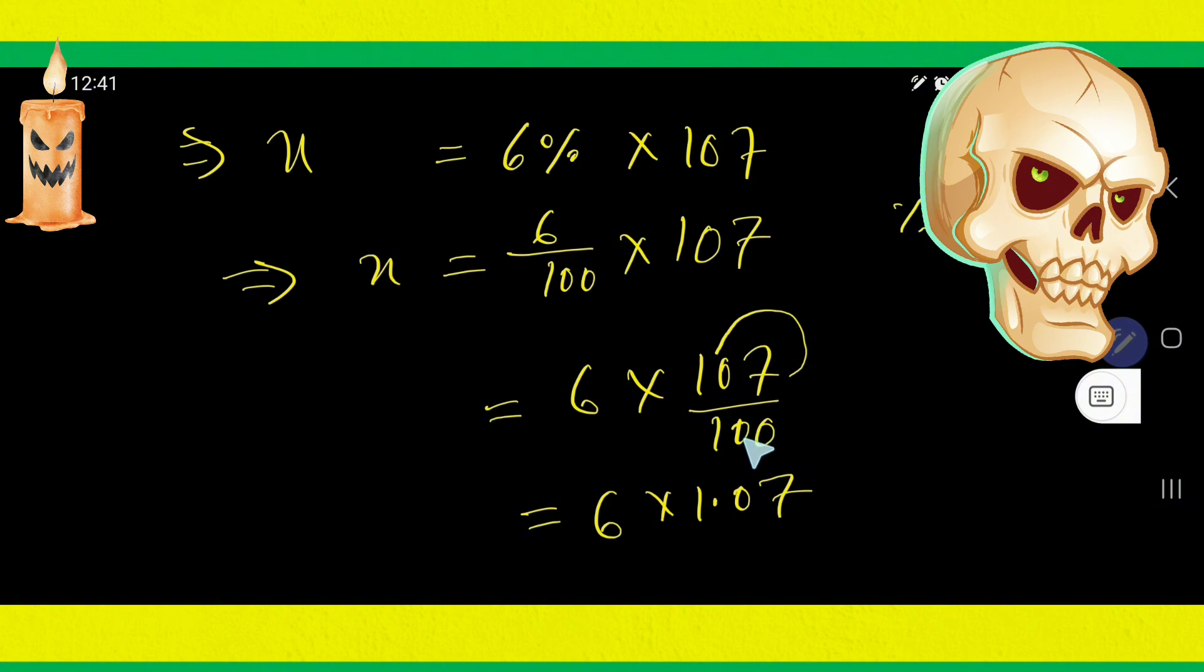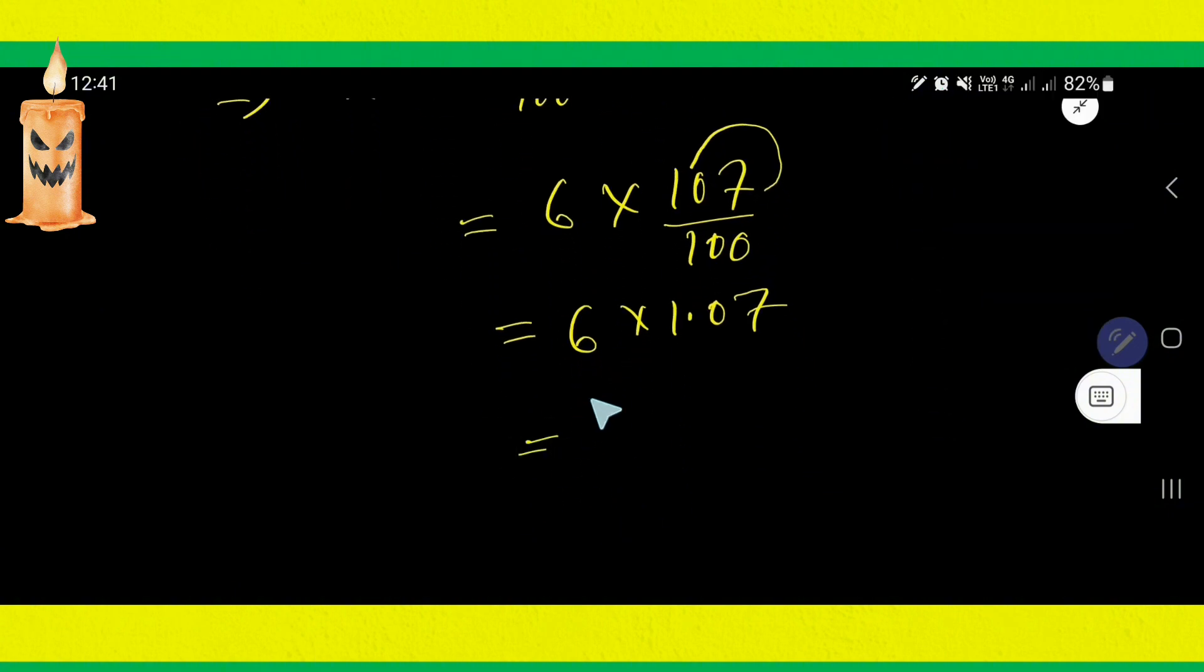If you divide this by this, the decimal point will come here. Now multiply 1.07 by 6.